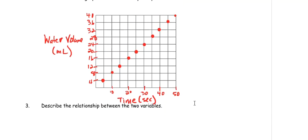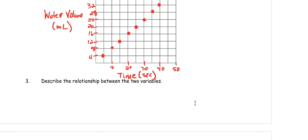Describe the relationship between the two variables. Is it a positive correlation? Is it a negative correlation? Or is it no correlation? When you're trying to figure out correlations, you're looking at the graph left to right. And this is increasing. So, it is a positive correlation.